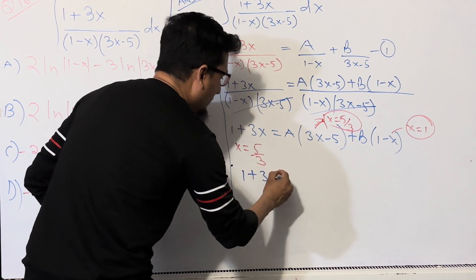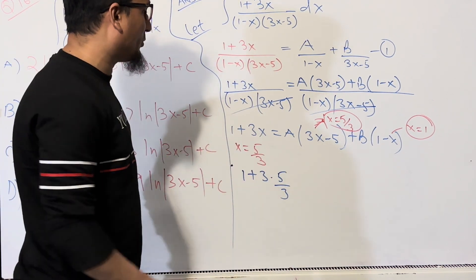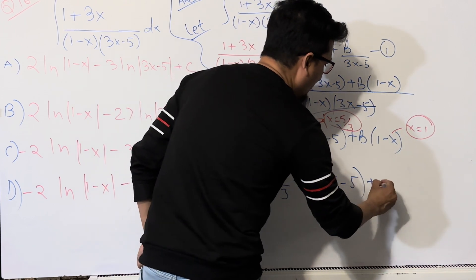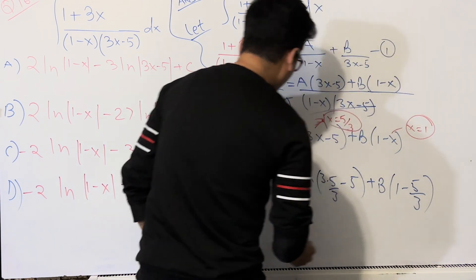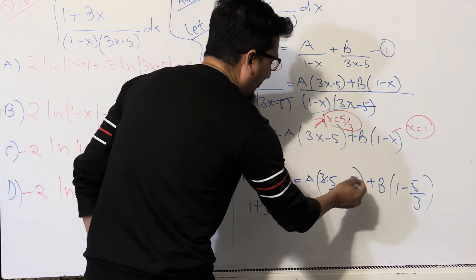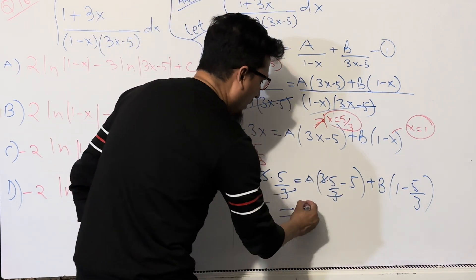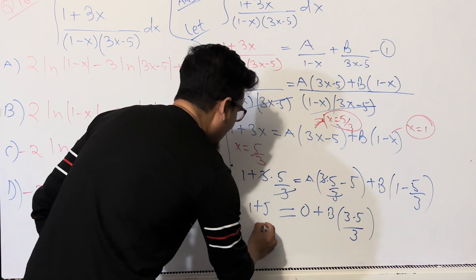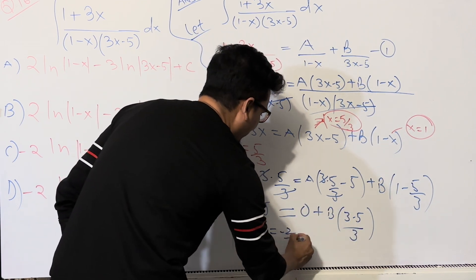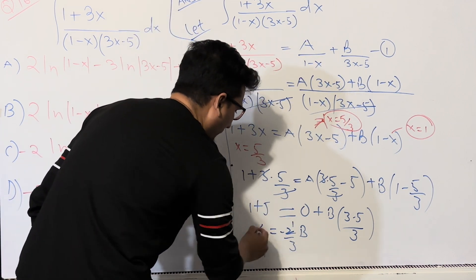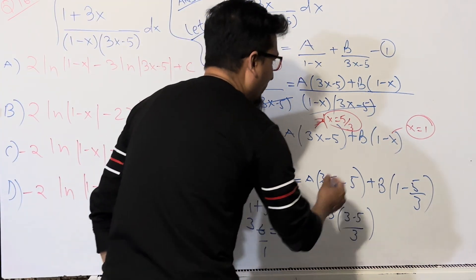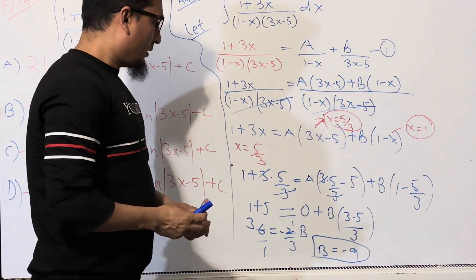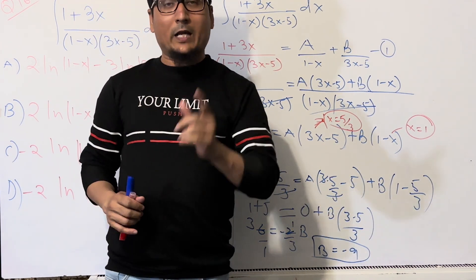Substituting x = 5/3: left side gives 1 + 3(5/3) = 1 + 5 = 6. Right side: A(3(5/3) - 5) + B(1 - 5/3) = 0 + B(-2/3). So 6 = B(-2/3), which gives B = 6 × (-3/2) = -9. Therefore B = -9.